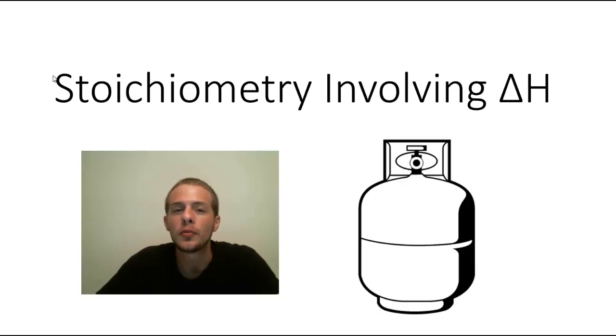So typically with stoichiometry what you would do is you would have one reactant or product. Let's say you have a certain amount of a reactant and you want to know how much product you can get out of it. Well you would use stoichiometry and your biggest tool is going to be the balanced chemical equation to allow you to convert from the moles of one reactant or product to the moles of another reactant or product.